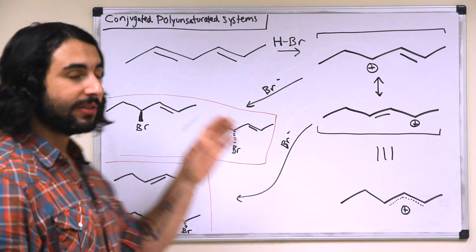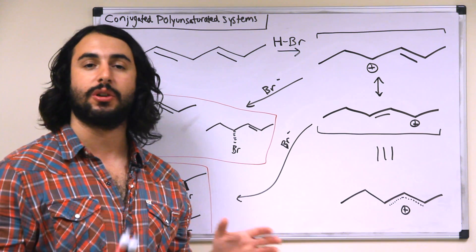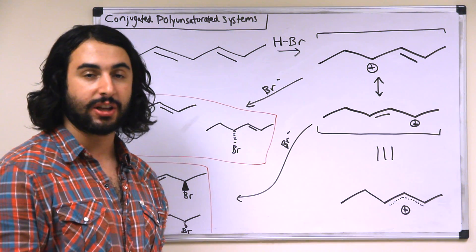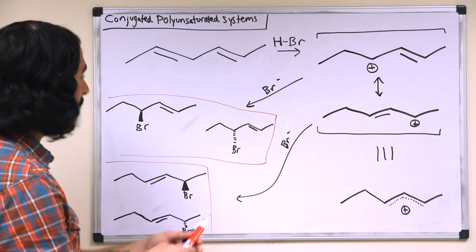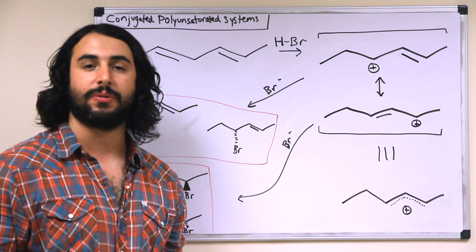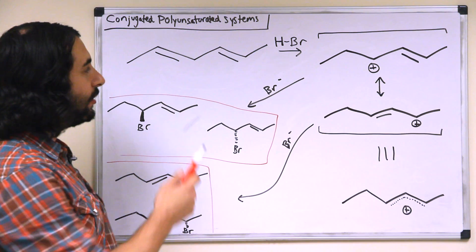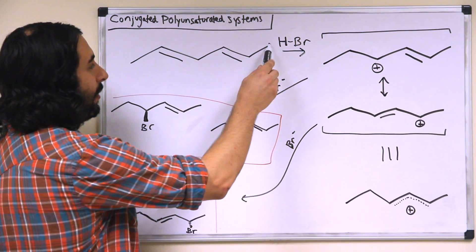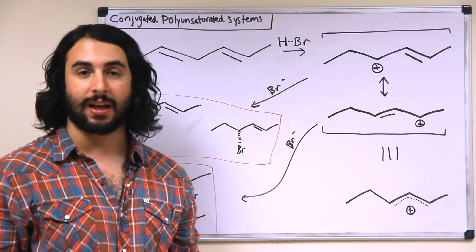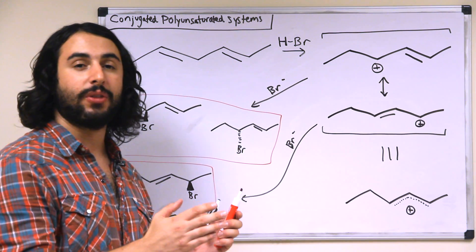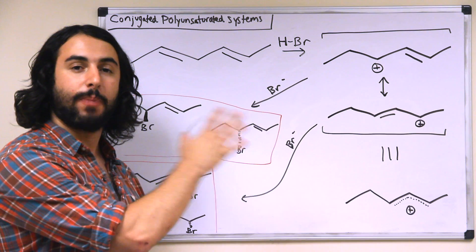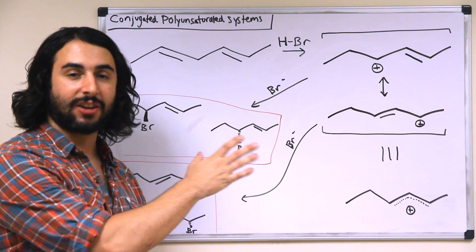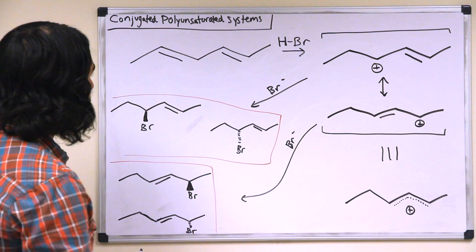Now let's go back to the addition reactions and see what is going to change here due to the conjugated polyunsaturated quality of this molecule. We're going to use a simplified situation by looking at a symmetrical molecule. Because this is symmetrical, it's not going to matter which pi bond we use in the reaction.